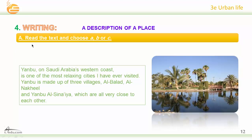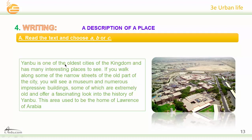Now read the text and choose A, B, or C. Yanbu, on Saudi Arabia's western coast, is one of the most relaxing cities I have ever visited. Yanbu is made up of three villages: Al-Balad, Al-Nakhil, and Yanbu Al-Sinaya, which are all very close to each other. Yanbu is one of the oldest cities of the kingdom and has many interesting places to see. If you walk along some of the narrow streets of the old part of the city, you will see a museum and numerous impressive buildings, some of which are extremely old and offer a fascinating look into the history of Yanbu. This area used to be the home of Lawrence of Arabia.